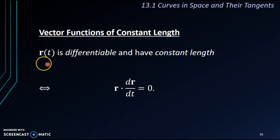In other words, if r(t), let's say I use r(t) to represent a vector function, if r(t) is differentiable and has constant length, then it means r(t) and its differentiation, they are perpendicular to each other. Same as if they are perpendicular to each other, it means that r(t) is differentiable and has constant length.